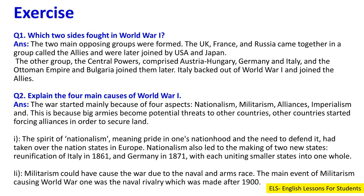Question 1: Which two sides fought in World War One? Answer: The two main opposing groups were formed. The UK, France and Russia came together in a group called the Allies, and were later joined by the USA and Japan. The other group, the Central Powers, comprised Austria-Hungary, Germany and Italy, and the Ottoman Empire and Bulgaria joined them later. Italy backed out of World War One and joined the Allies.